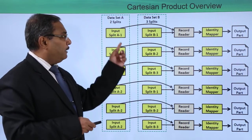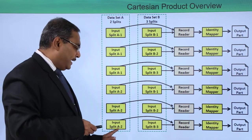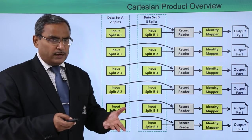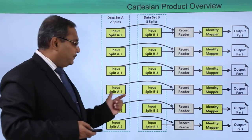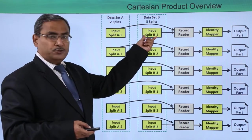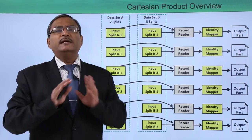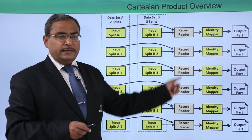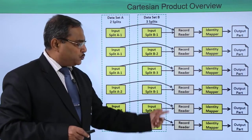So what we are getting? We are getting the combinations A1-B1, A1-B2, A1-B3. Similarly, we are having A2-B1, A2-B2, and A2-B3. Data set A is having two splits — input split A1 and input split A2 — and data set B is having three splits — input split B1, B2, and B3. So if I want to get all possible combinations, then I shall be having six such combinations. This record reader is taking the respective splits from two data sets as shown in the diagram.